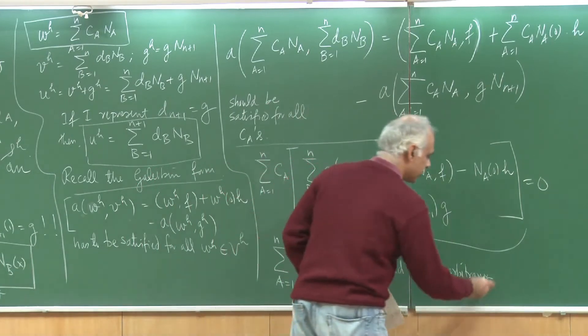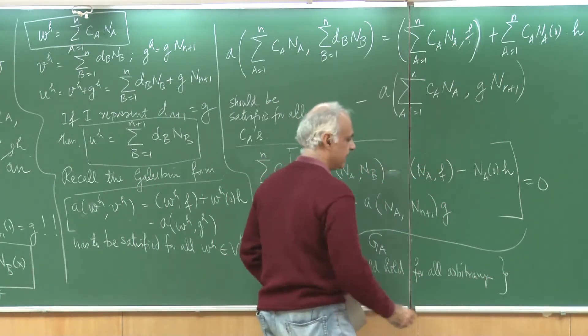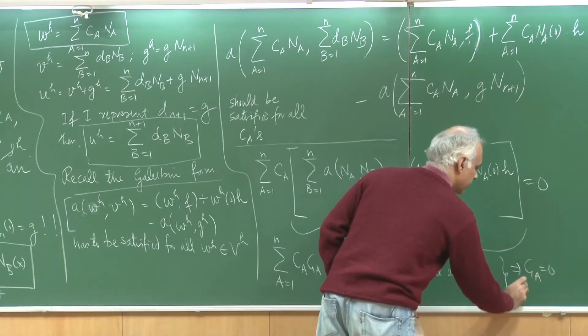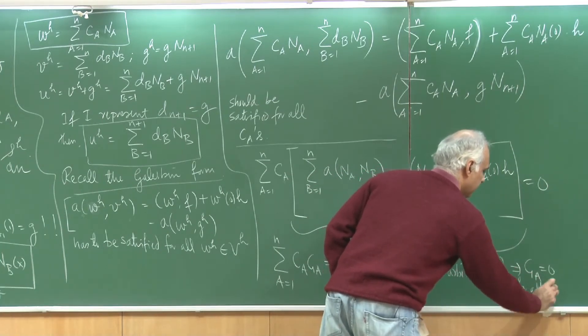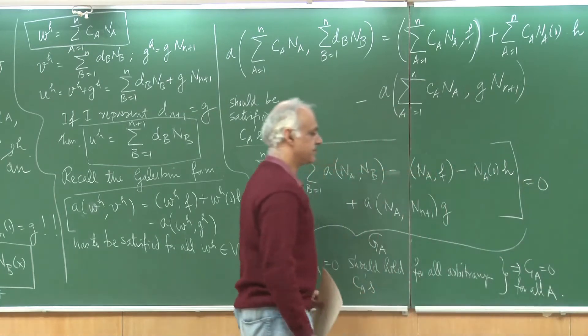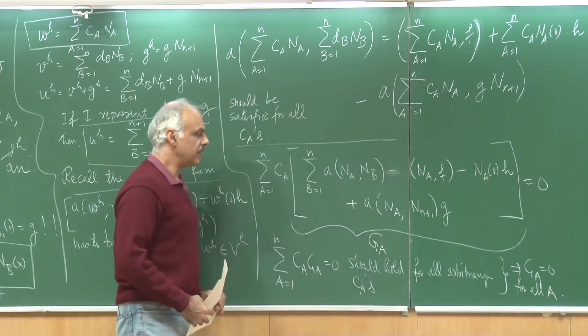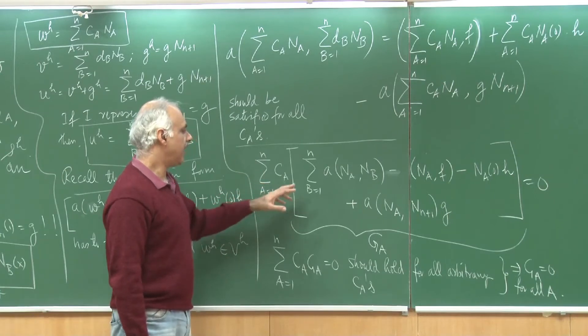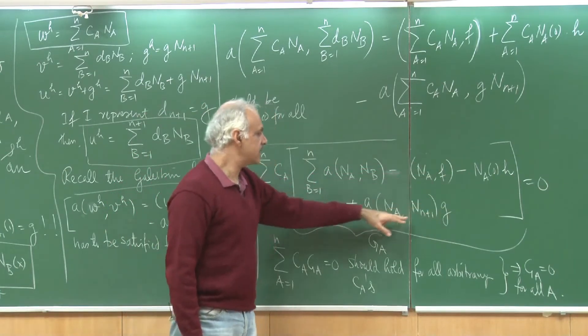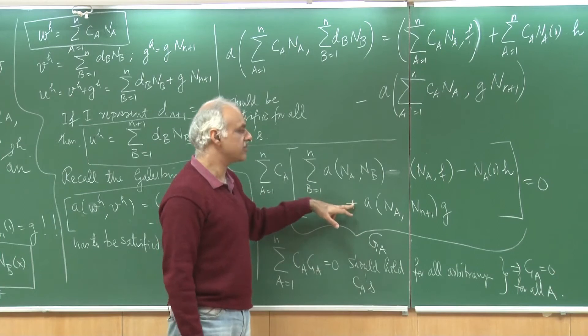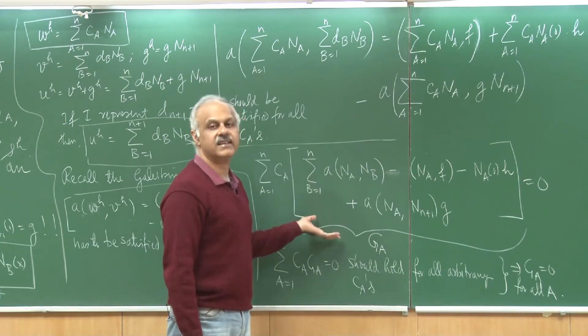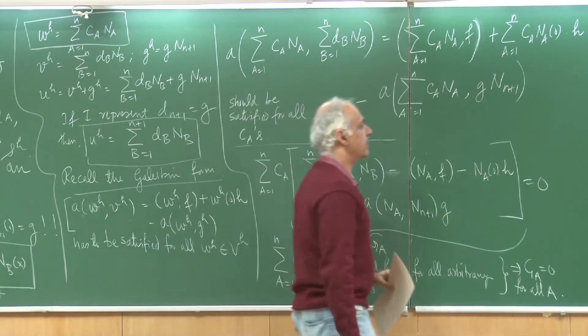I hope you are able to appreciate that this would imply that g_a is 0 for all a. Essentially when I try to write down the Galerkin form I am able to get this equation here g_a equal to 0 for all a and a goes from 1 through n. In fact, I have generated n equations. Let me write that down.